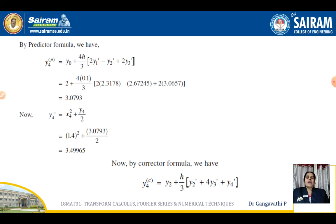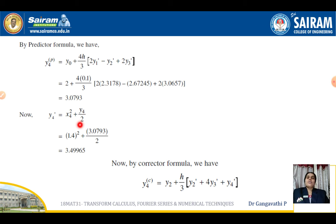To find y₄, apply the Predictor Formula, substitute all values, and simplify to get y₄p = 3.0793. To use the Corrector Formula, we also need y₄'. y₄' = x₄² + y₄/2. Substituting x₄ = 1.4 and y₄p = 3.0793 and simplifying, y₄' = 3.49965.